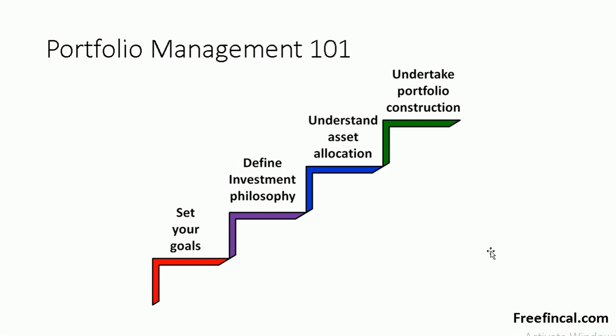Once these steps are complete, we should then look at product categories in each asset class, and then finally choose the product — that is, undertake portfolio construction. These are the first four basic steps.